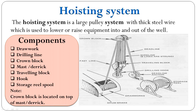This component is called the deadline anchor. This is called the drilling line storage spool, which has extra drilling line spooled on it — it is storage for the extra drilling line. Now we will see how the drilling line from the drilling line storage spool passes through all the hoisting system components and goes to the drawworks.